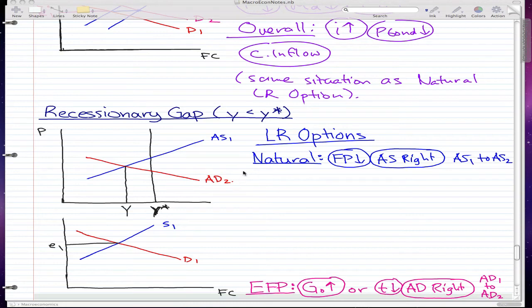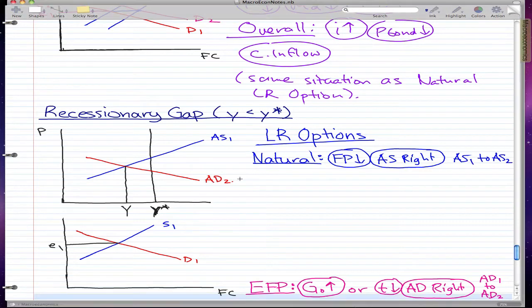We're finally on the last recessionary gap analysis. This one is the same as the last one, just with it being a recessionary gap. Let's go through the long run options. The first long run option is natural where we let our factor prices fall. This will let our AS move right from AS1 to AS2.